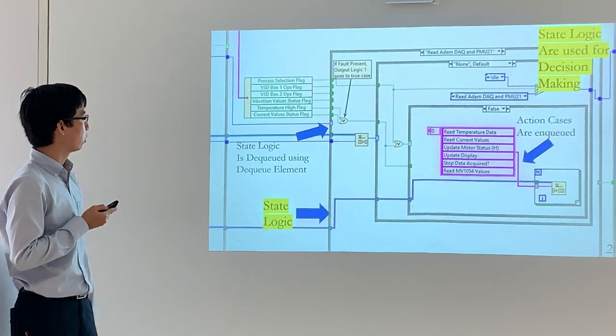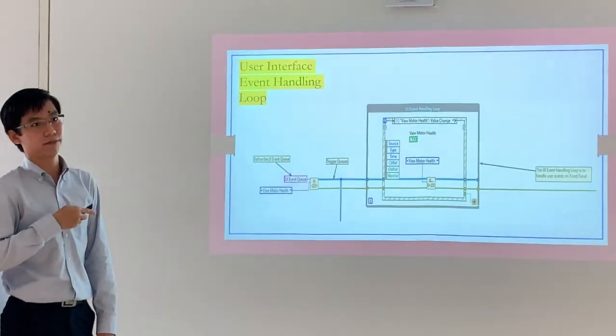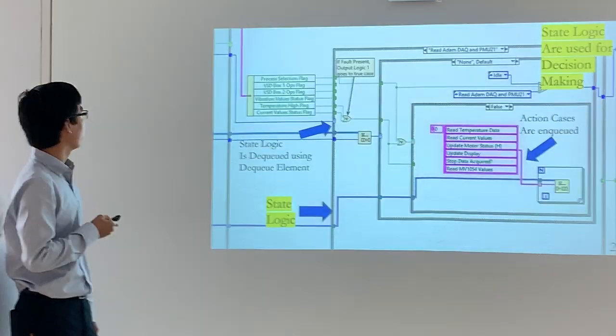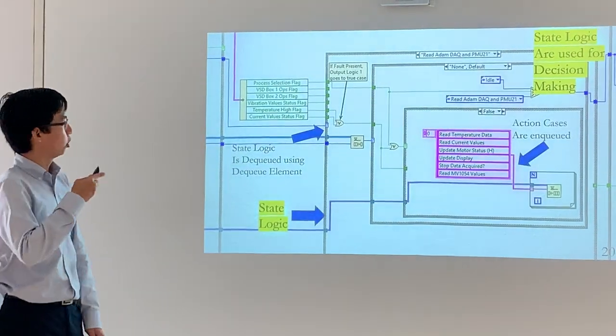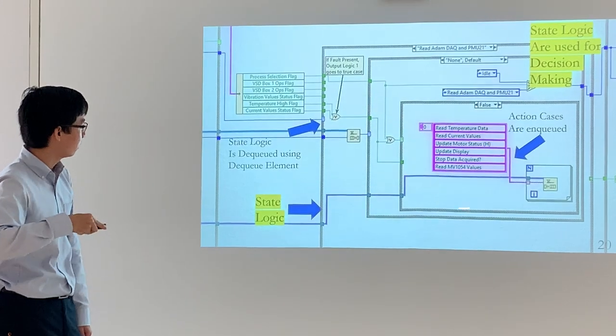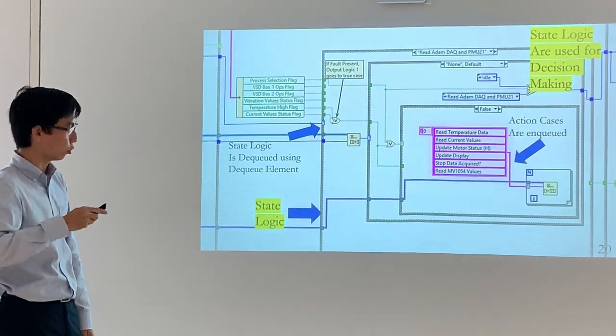The user interface event handling loop is used to handle user events on the front panel. The state logic is used for decision making. This is where the action cases are executed.